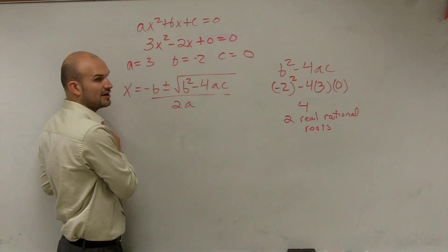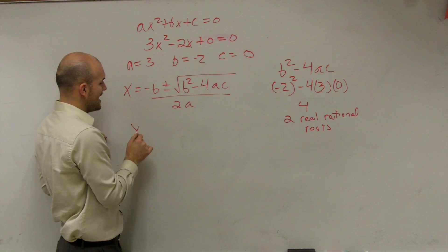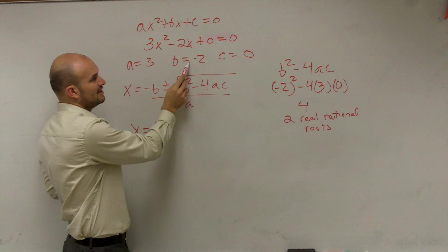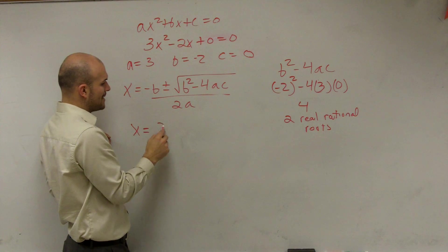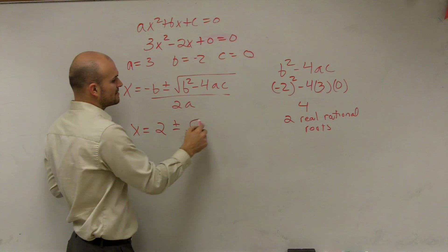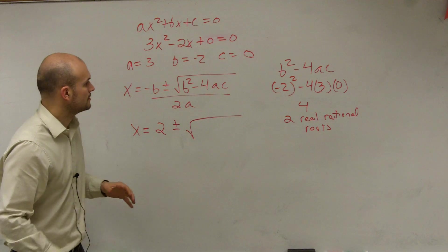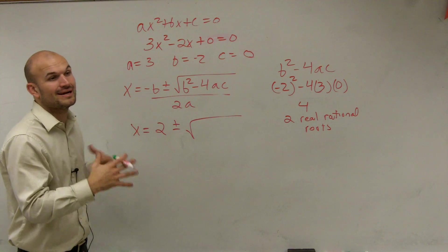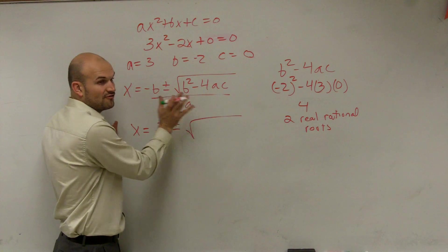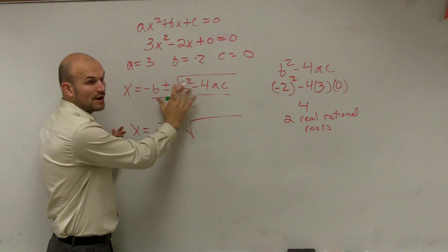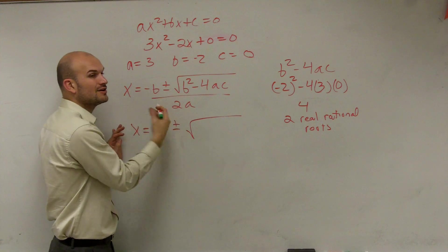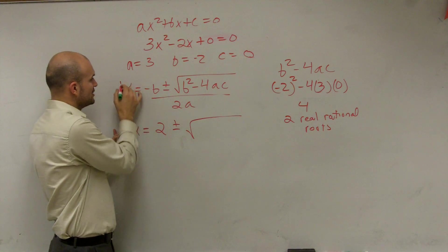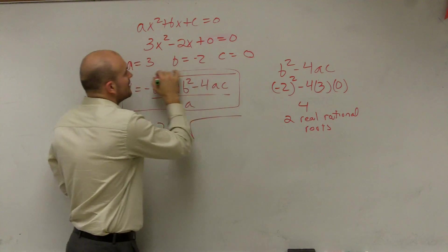So let's plug in our values. The values of x, when this function equals 0, equals opposite of b. If b is negative 2, the opposite of that is positive 2, plus or minus. Now the plus or minus is part of the formula — I can explain where it comes from, but for right now I just want you to understand this is the formula.